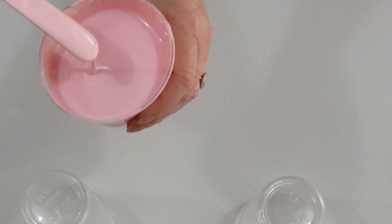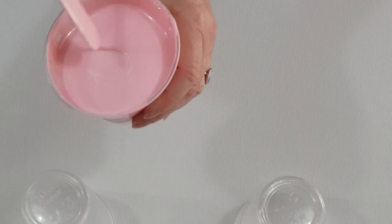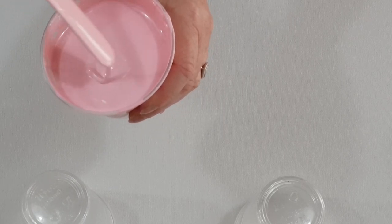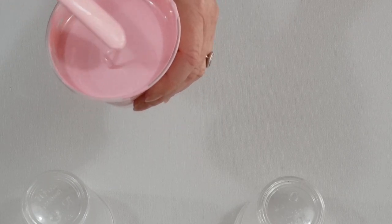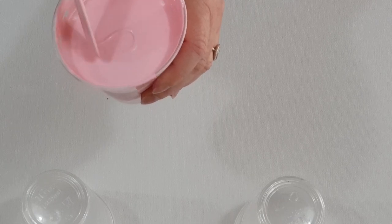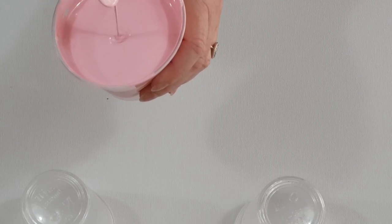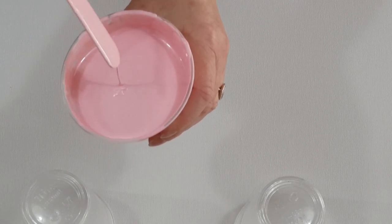If you're not in Australia and you can't get the global impastos, the liquitex basics are similar. They're a little bit thicker and you need to mix them four parts flow troll to one part paint.